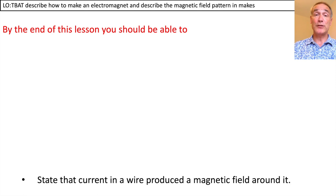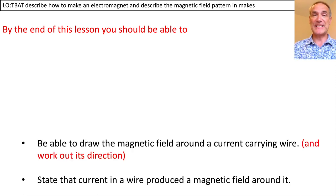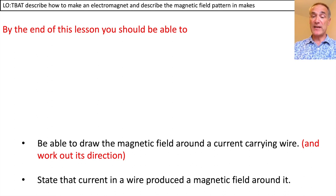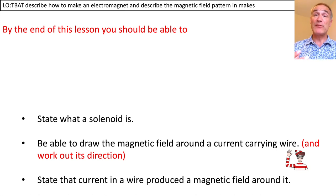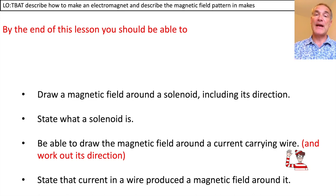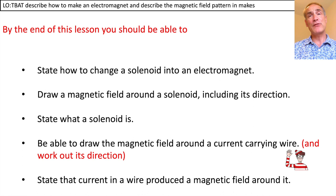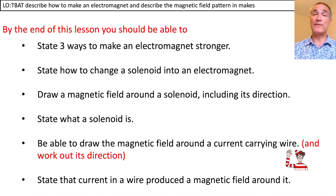By the end of this lesson you should be able to state that current in a wire produces a magnetic field, draw the magnetic field around a current-carrying wire, and for an extra challenge work out its direction. You should also be able to state what a solenoid is and draw its magnetic field including direction, state how to change a solenoid into an electromagnet, and state three ways to make an electromagnet stronger.